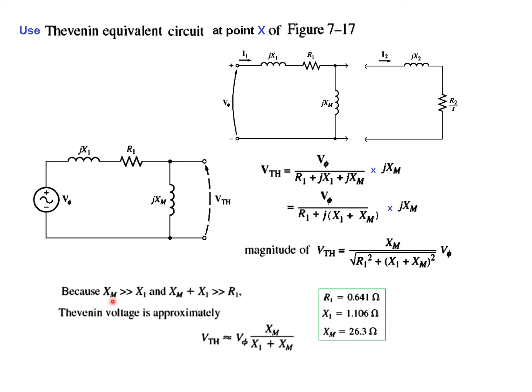Now we will do some simplification. We are assuming that X_M is greater than X_1, and also X_M plus X_1 is greater than R_1. I have taken these values from an example that we will be solving, Example 7.5. From here you can see that R_1 is the smallest. X_1 is 1.06 but X_M is 26.3, so X_M is much greater than X_1 and X_M plus X_1 is also much greater than R_1. So what we will do is neglect R_1. So in the top it will be X_M divided by X_1 plus X_M because X_1 plus X_M whole squared and under root will cancel. So this is the simplified form of V_Thevenin. You have to remember this formula to calculate V_Thevenin.